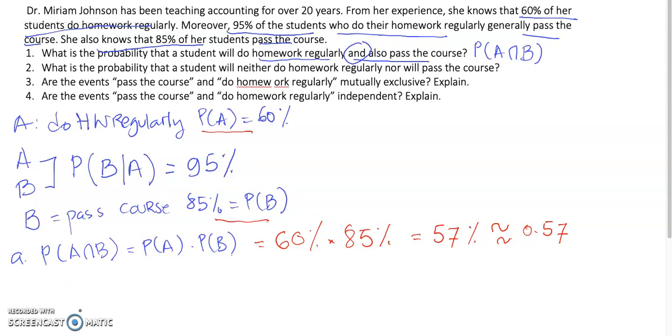Now, for number 2 here, what is the probability that a student will neither do homework regularly nor will pass the course? So, that should be P(A or B) complement.